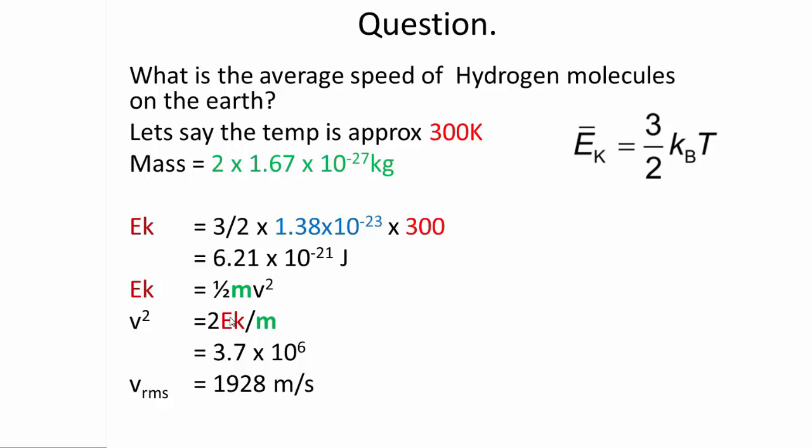So the average velocity is 1928 meters per second. Now this is a particular average, the RMS values average, because it's basically taken from the average of the kinetic energy. And to get the velocity from the kinetic energy, you have to square root it. So it's called the root mean square. So it's the root of the mean value for the kinetic energy.